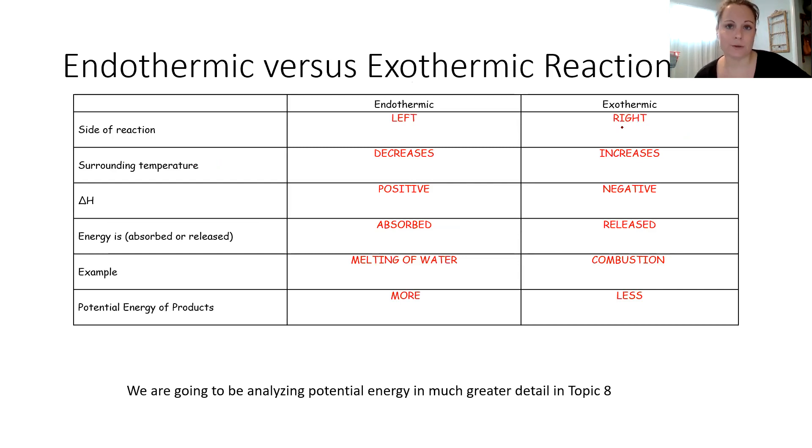So endothermic and exothermic are two new terms for us. Endothermic reactions involve energy coming into an equation. So where you would find energy in an endothermic reaction is on the left side or the reactant side of an equation. In an endothermic reaction, energy is absorbed. So the surrounding temperature is going to decrease.